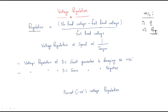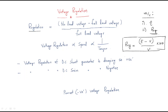Voltage regulation is defined as: (No-load voltage minus Full-load voltage) divided by Full-load voltage, multiplied by 100. Here, no-load voltage is the induced EMF (E) and full-load voltage is V. So the formula is (E − V) / V × 100. Voltage regulation is proportional to the speed of the machine and inversely proportional to the torque.